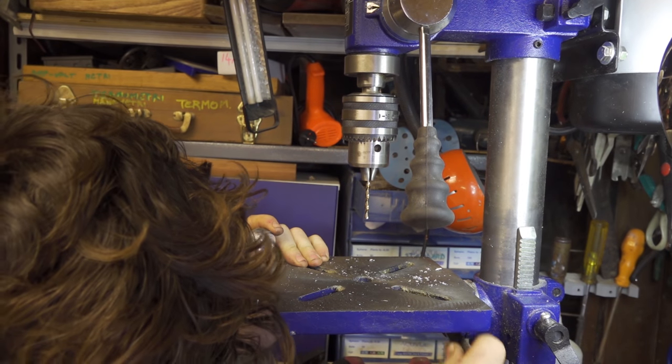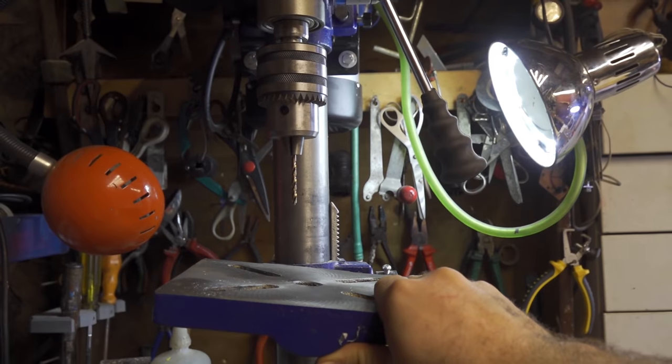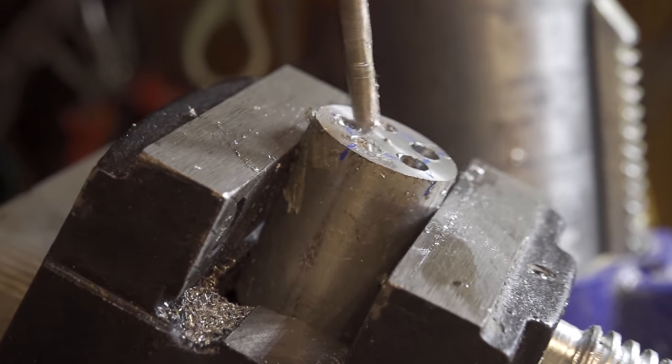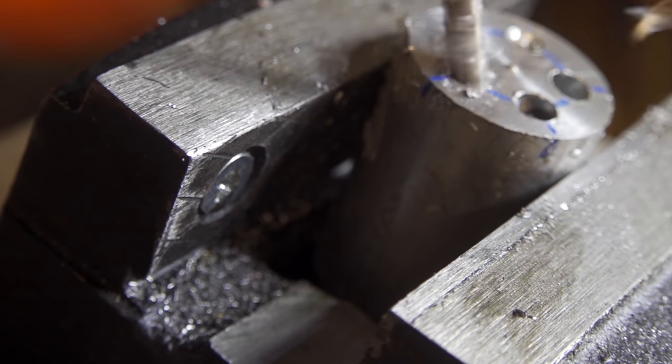Now I have to change the angle of the base of my drill press. This is because I want to make holes at an angle. And 32 or 33 degrees angle is a great angle for these holes.